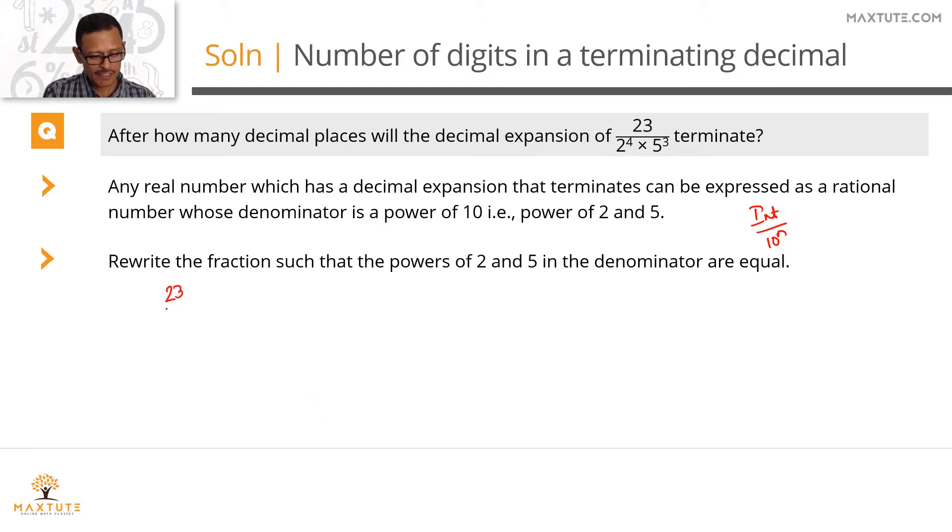23 divided by 2 raised to the power of 4 into 5 cubed. There are more 2's. We have a power of 4 for 2 whereas only a power of 3 when it comes to 5. If we multiply and divide it by a 5, the value of the expression does not change. The numerator will become 115. The denominator will become 2 raised to the power of 4 into 5 power 4. Now the powers of 2 and 5 are the same. 2 power 4 into 5 power 4 is nothing but 10 power 4. So 115 divided by 10 power 4. This will have 4 decimal places, 4 places after which it will terminate.